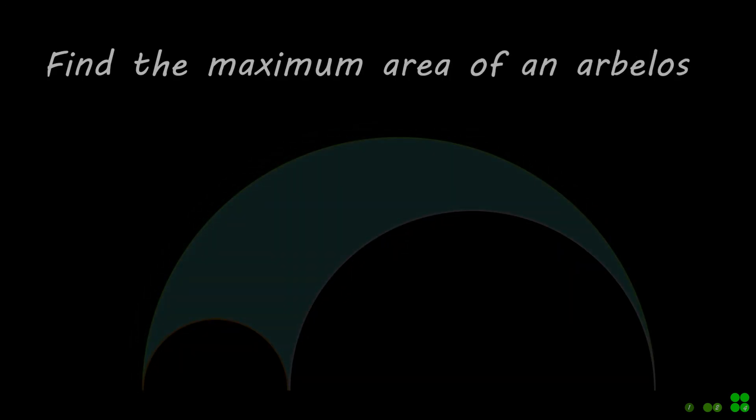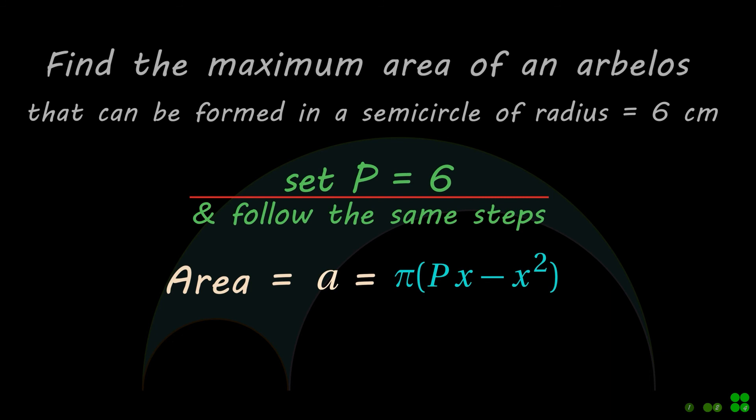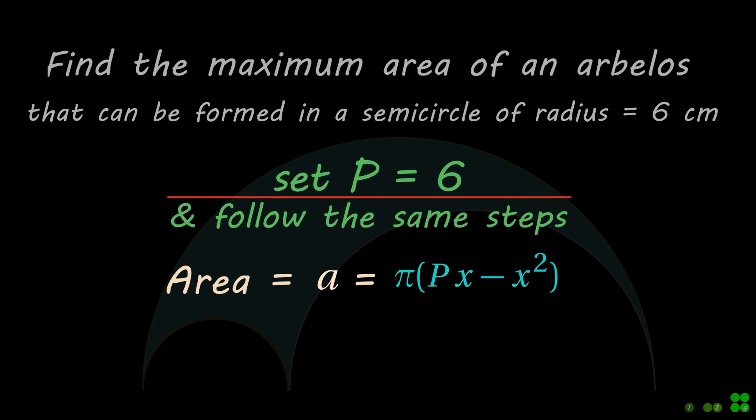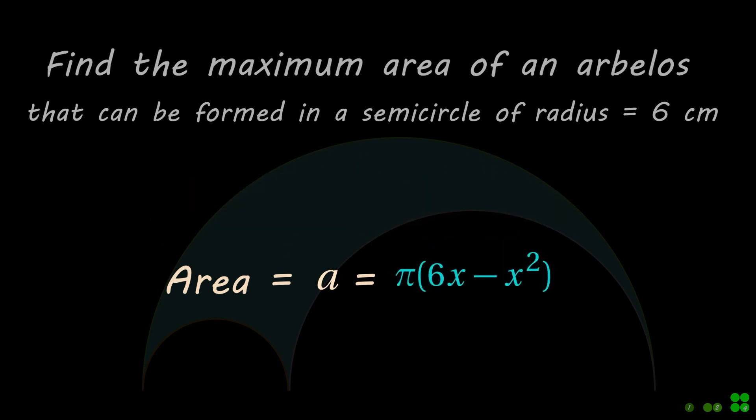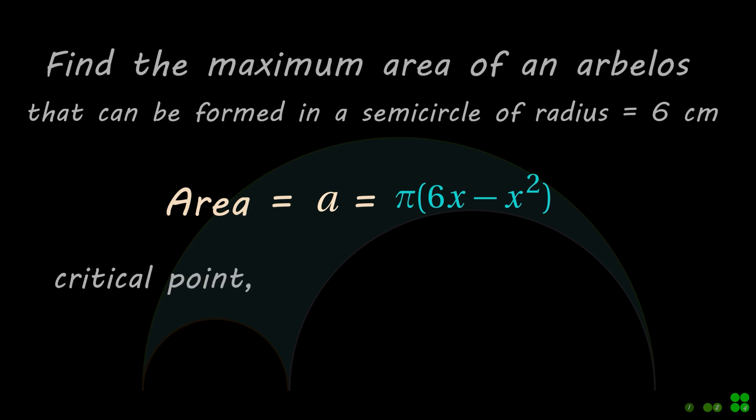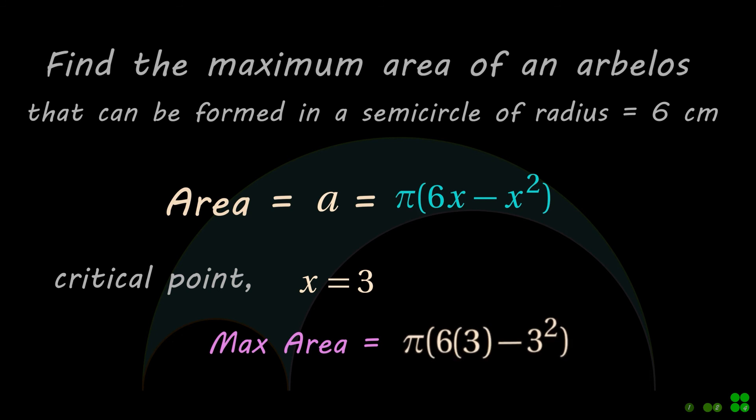Find the maximum area of an Arbelos that can be formed in a semicircle of radius 6 centimeters. Follow the same steps as earlier and set p equals 6. Here is the required maximum area.